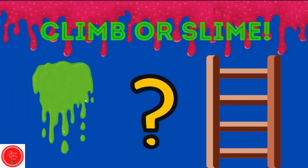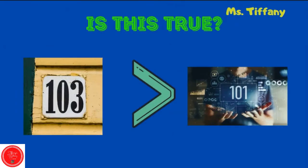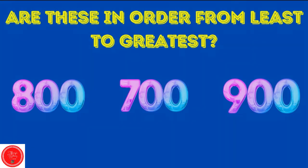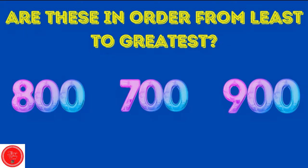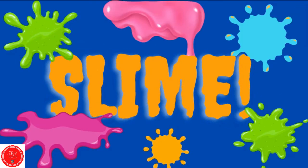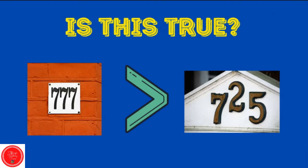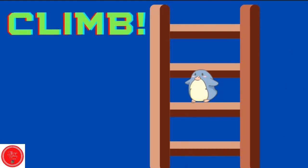All right, time for climb or slide. Is this true? 103 is greater than 101. Yes, the mouth is eating the bigger number. Are these in order from least to greatest? Start with the hundreds place. No — 7 is smaller than 8, so that number should come first. Is this true? 777 is greater than 725. Yes, the mouth is eating the bigger number.